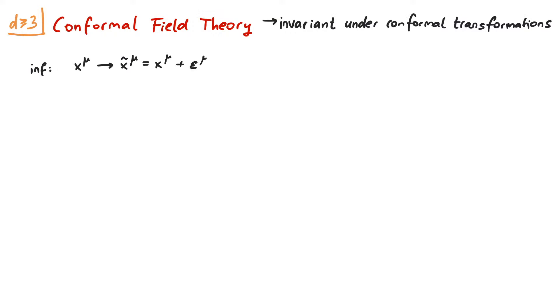For infinitesimal conformal transformations, we have the condition that d_mu epsilon_nu plus d_nu epsilon_mu has to be equal to 2 over d times the divergence of epsilon times the metric. Here it's not yet specified in how many dimensions we work, so it's just d.